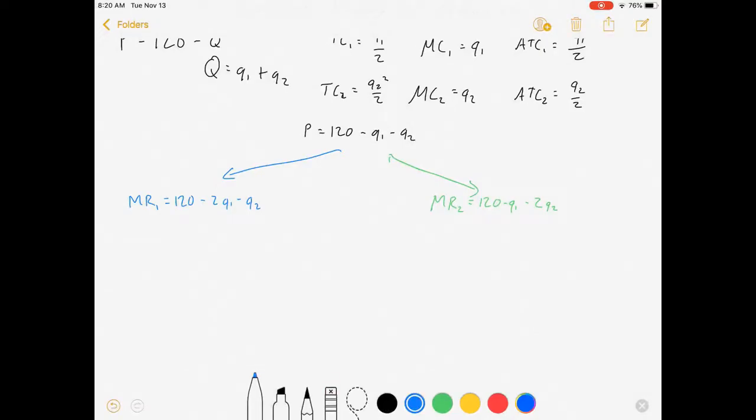Let's do firm one's decision. We want to set firm one's marginal revenue equal to firm one's marginal cost, so increase production until you've captured every good transaction. 120 minus 2q1 minus q2 equals q1. 3q1 equals 120 minus q2. 40 minus one-third q2 equals q1. This is what we call firm one's best response function, where firm one will know exactly what q it wants to produce for any choice of quantity that firm two chooses. So it tells us our best response to whatever they do.